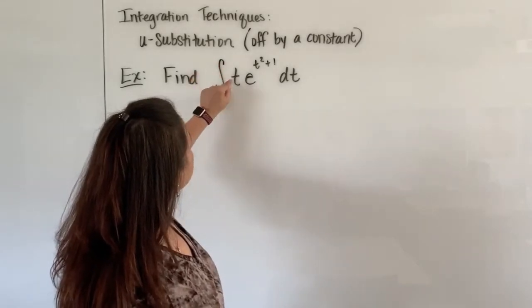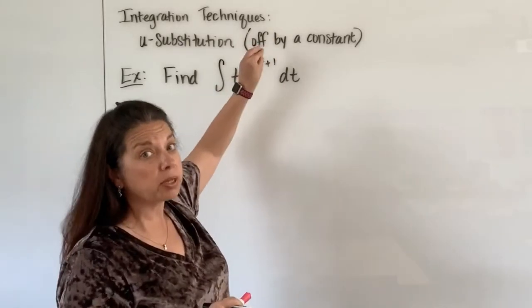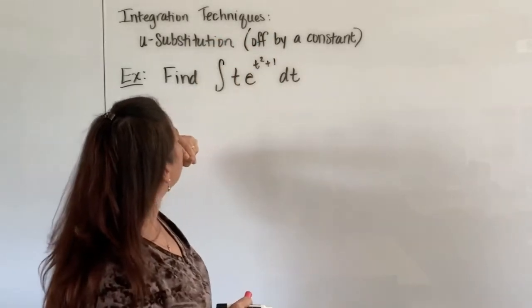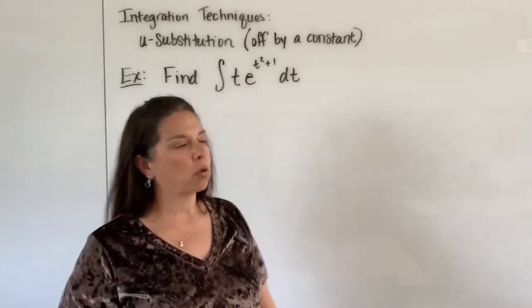I see I have the integral of t times e to the t squared plus one. That whole t squared plus one is in the exponent of that e to the power and then multiplied by dt of course.